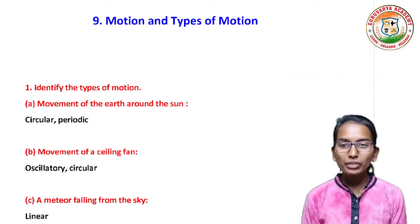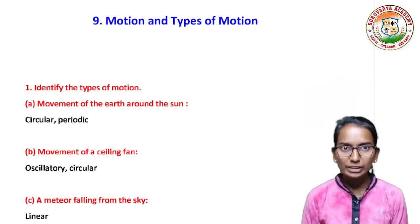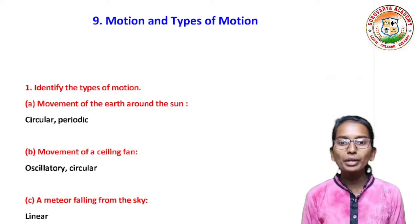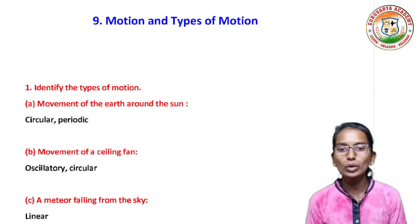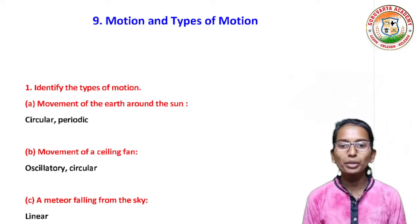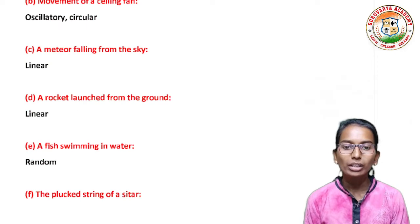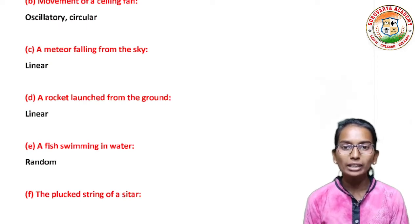Question number 1: Identify the types of motion. The motion of the earth around the sun is circular and periodic. Second, movement of a ceiling fan is oscillatory and circular. Third, a meteor falling from the sky is linear.